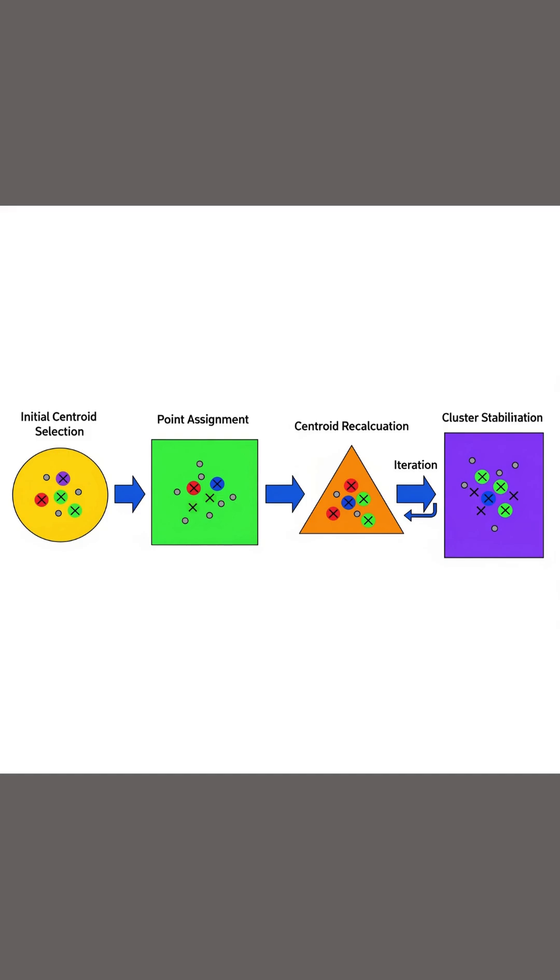It works by selecting k initial cluster centroids and assigning each data point to the closest centroid. The centroids are then recalculated and the process repeats until the clusters stabilize.